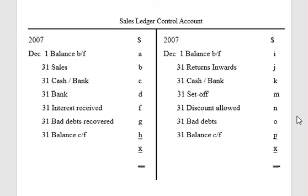Then bad debts recovered, returns outward, and returns inward — where customers return goods to you — are recorded as the total from the sales returns journal. Cash or bank shows how much money has been collected from customers. Then the contra entry, discount allowed, and bad debts. Discount allowed and cash or bank information comes from the cash book; returns inward from the sales returns journal; and sales information from the sales journal. Balances are taken from the sales ledger accounts.